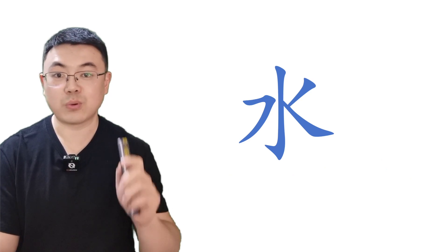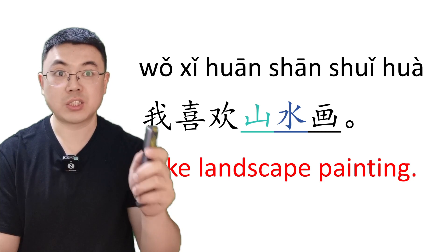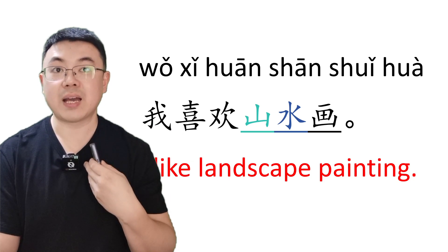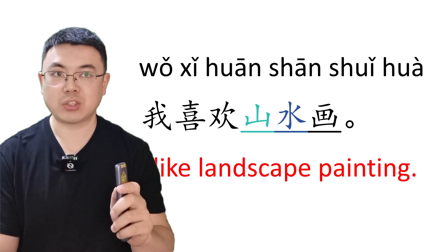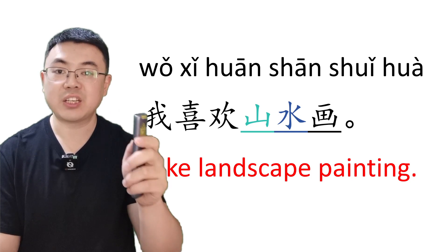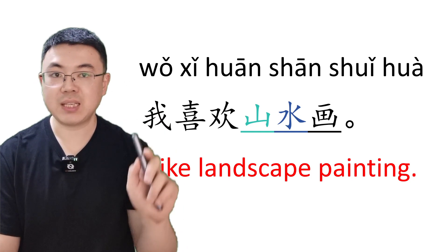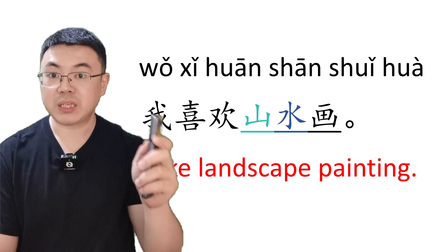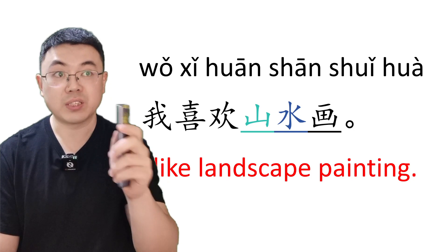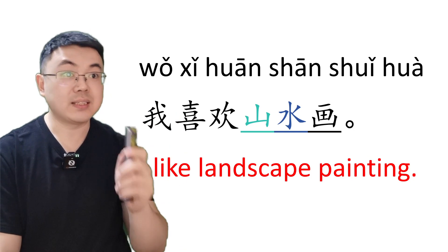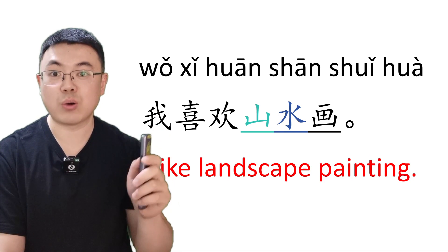Now, here is a sentence for these two characters. Wo xi huan shan shui hua. Wo means I, xi huan means like, shan means mountain, shui means water, but here it means rivers. Hua means painting. Shan shui hua means paintings about mountains and rivers. Wo xi huan shan shui hua means I like landscape painting. Are you clear?